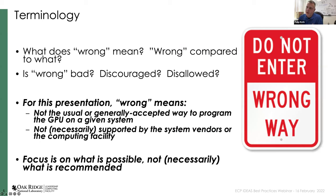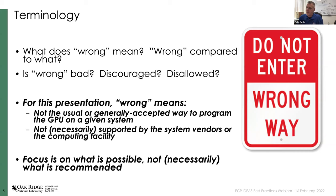Some of you may wonder about the title. I want to clarify what I mean by 'wrong.' For the purposes of this presentation, wrong means it's not the usual or generally accepted way to program a GPU on a system — not necessarily something supported by system vendors or the computing facility. The real activity here is to think about what's possible, not necessarily what's recommended. Perhaps I could have chosen 'off the beaten path' instead of 'wrong way.'